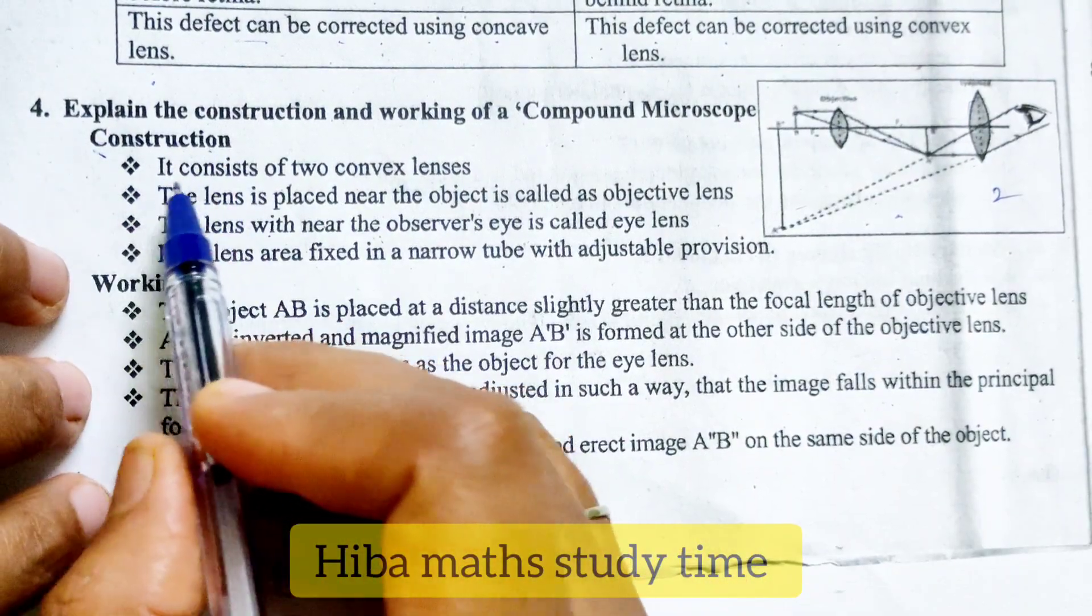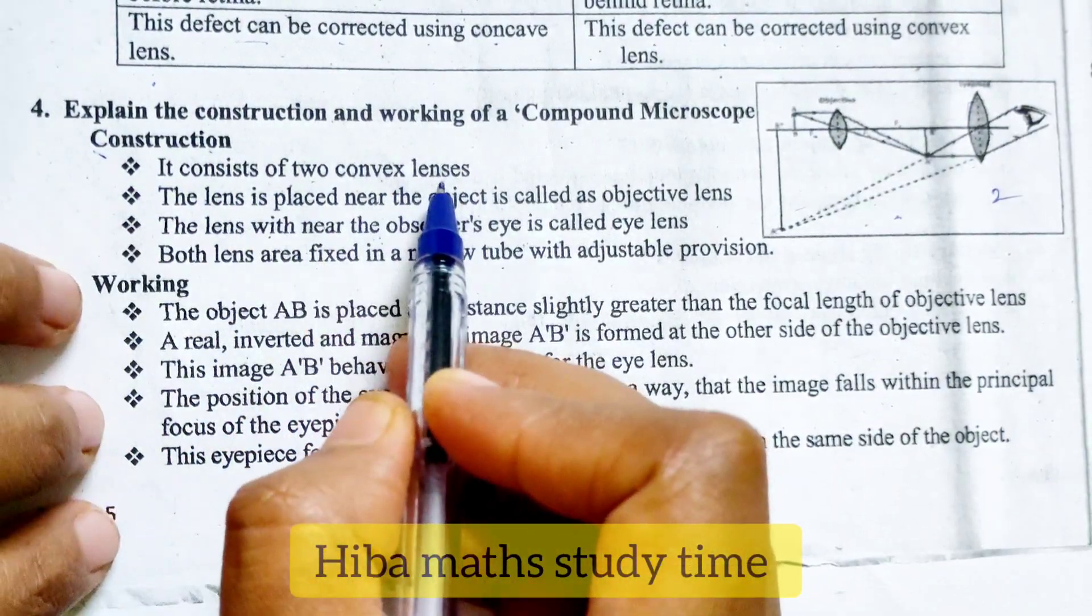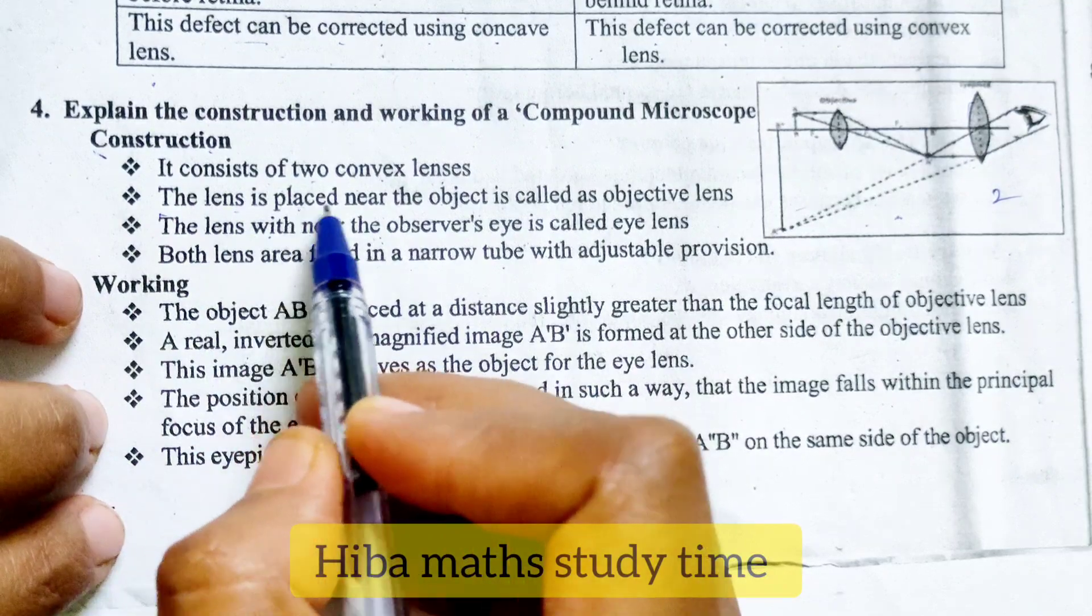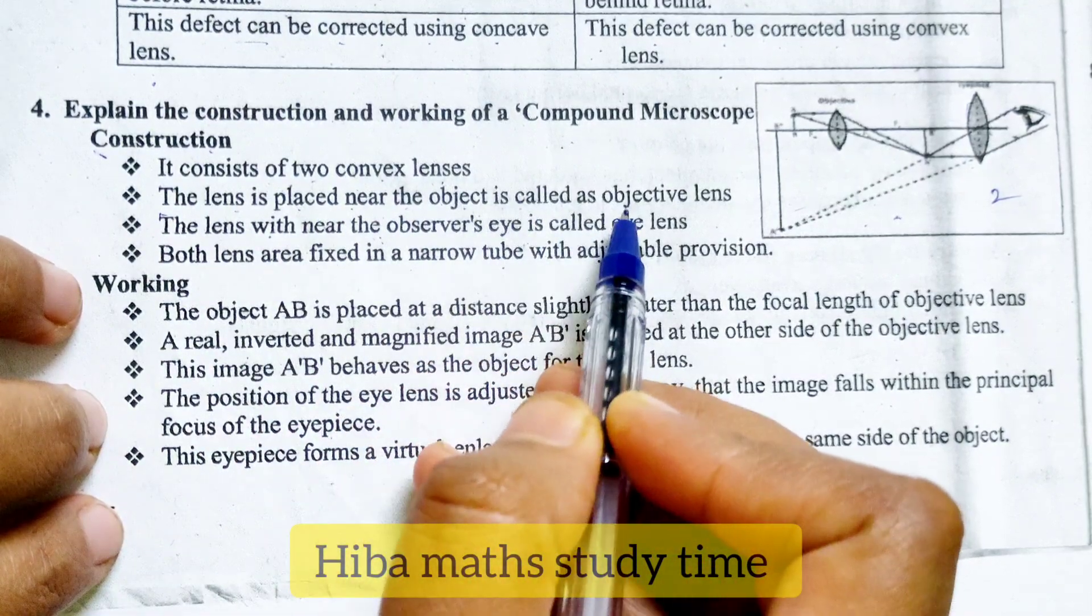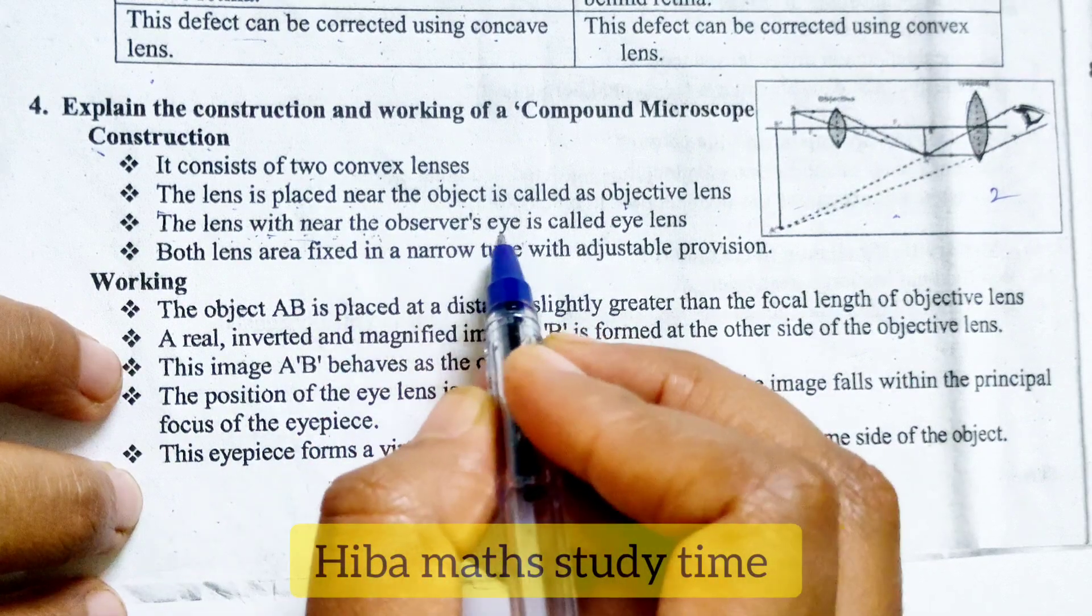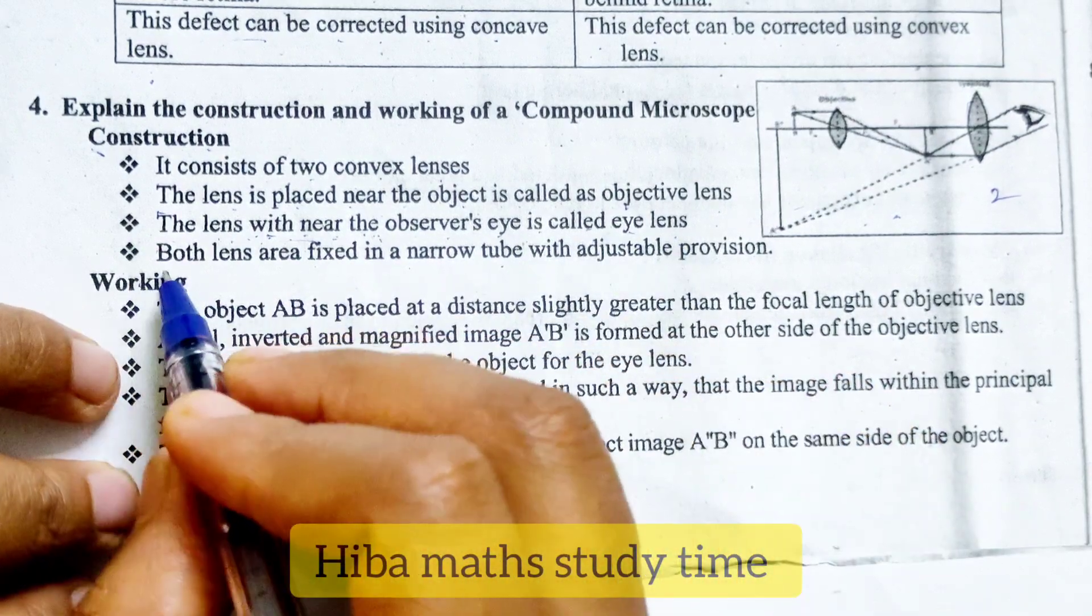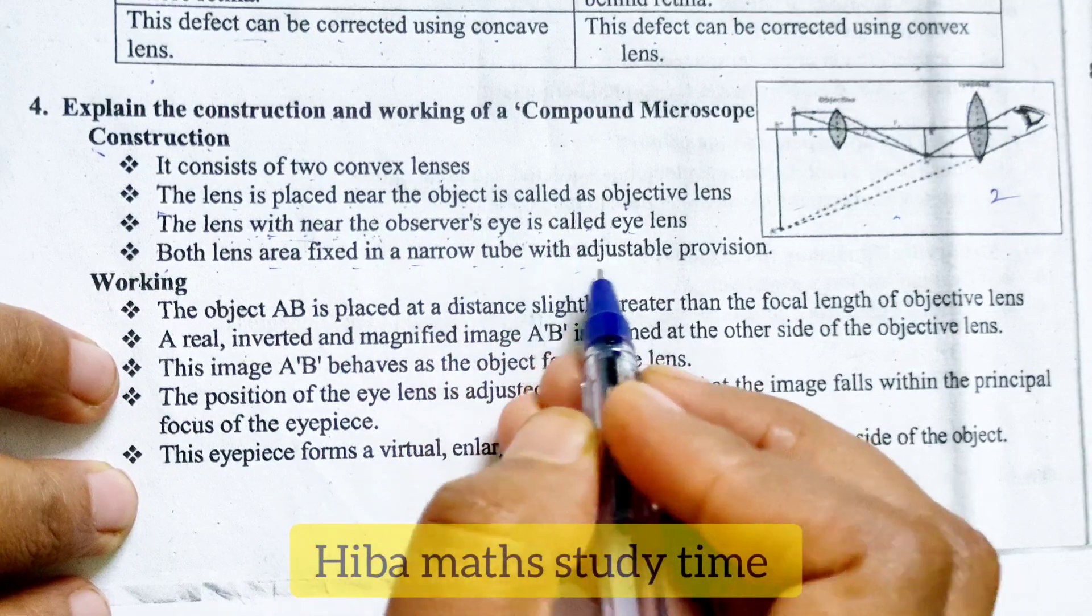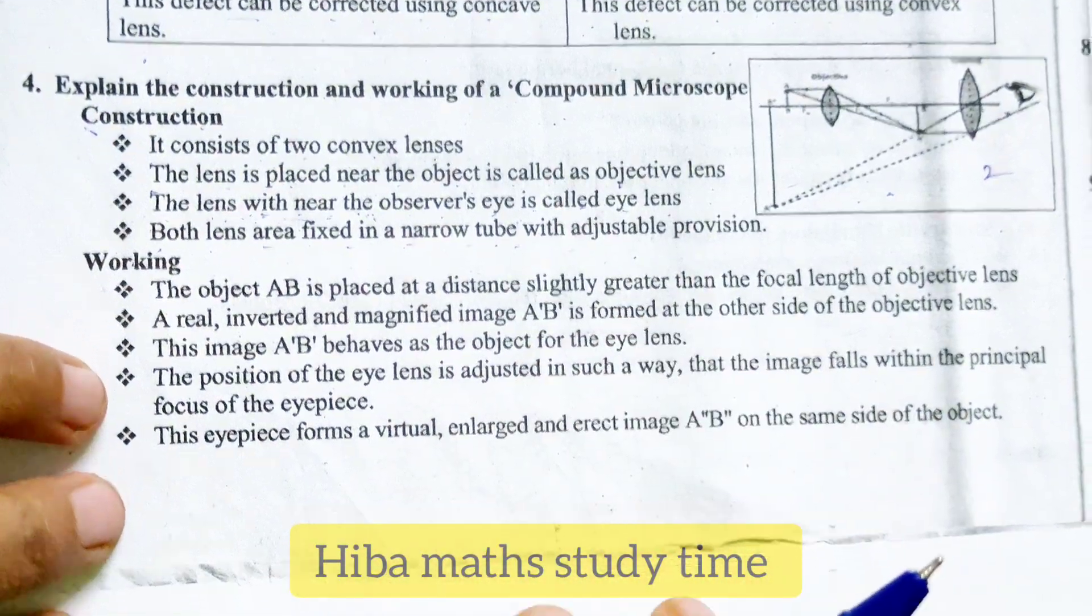Construction: it consists of two convex lenses. The lens placed near the object is called objective lens. The lens with near the observer's eye is called eye lens. Both lens are fixed in a narrow tube with adjustable provisions.